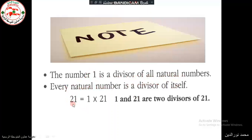For example, 21 is divisible by 1, and 21 is divisible by 21. These are the factors of 21, and they are at the same time divisors of 21. So 1 and 21 are two divisors of 21.